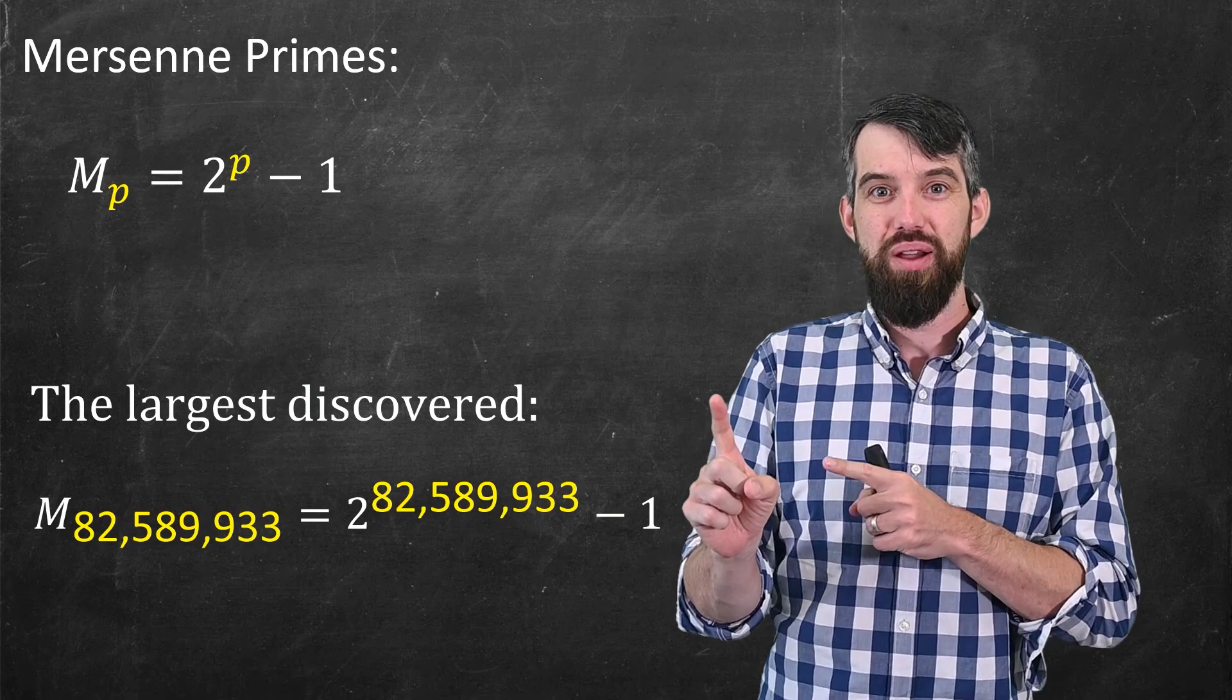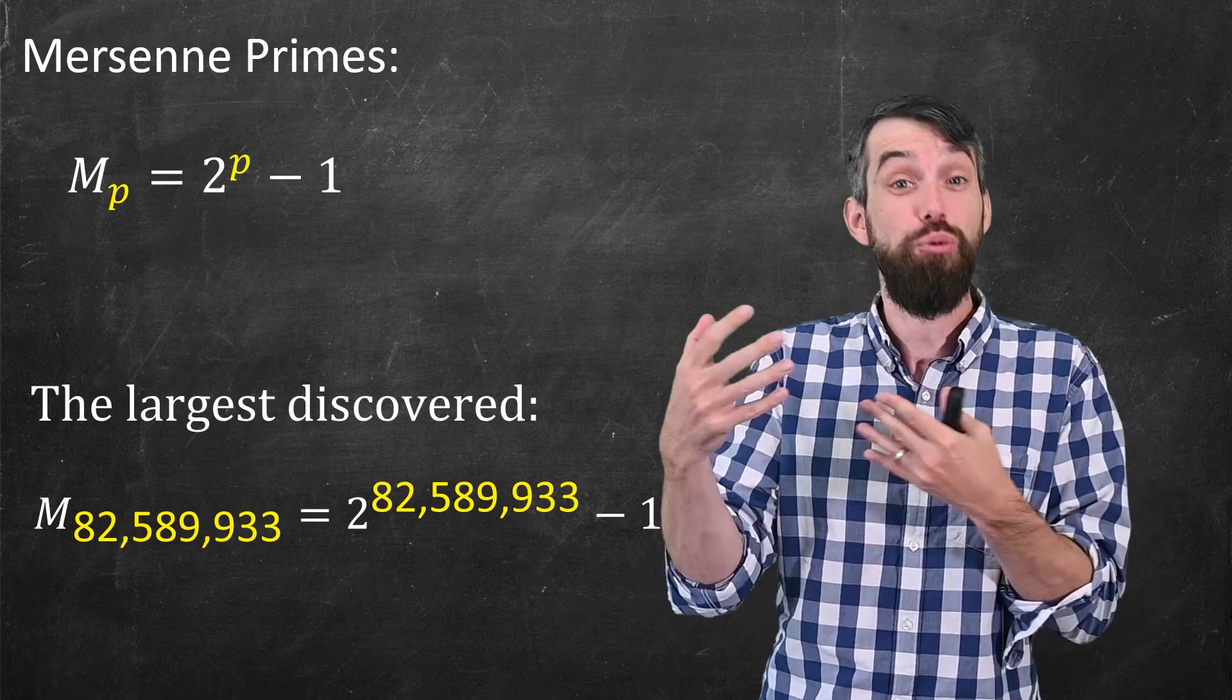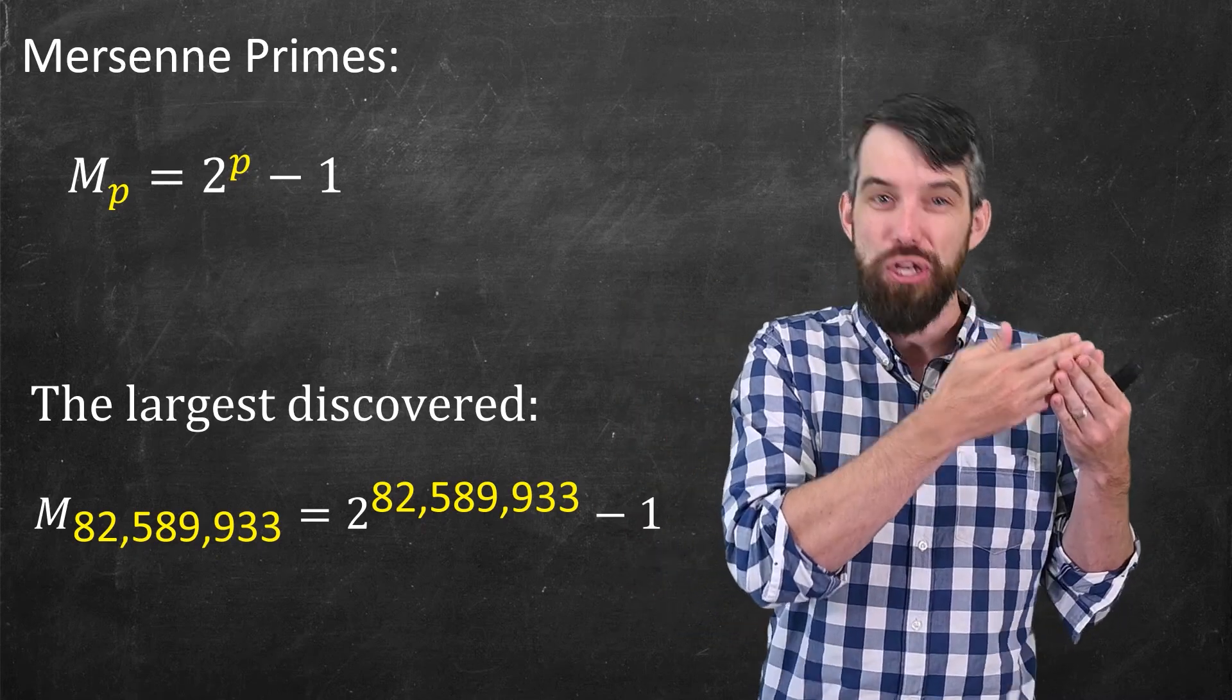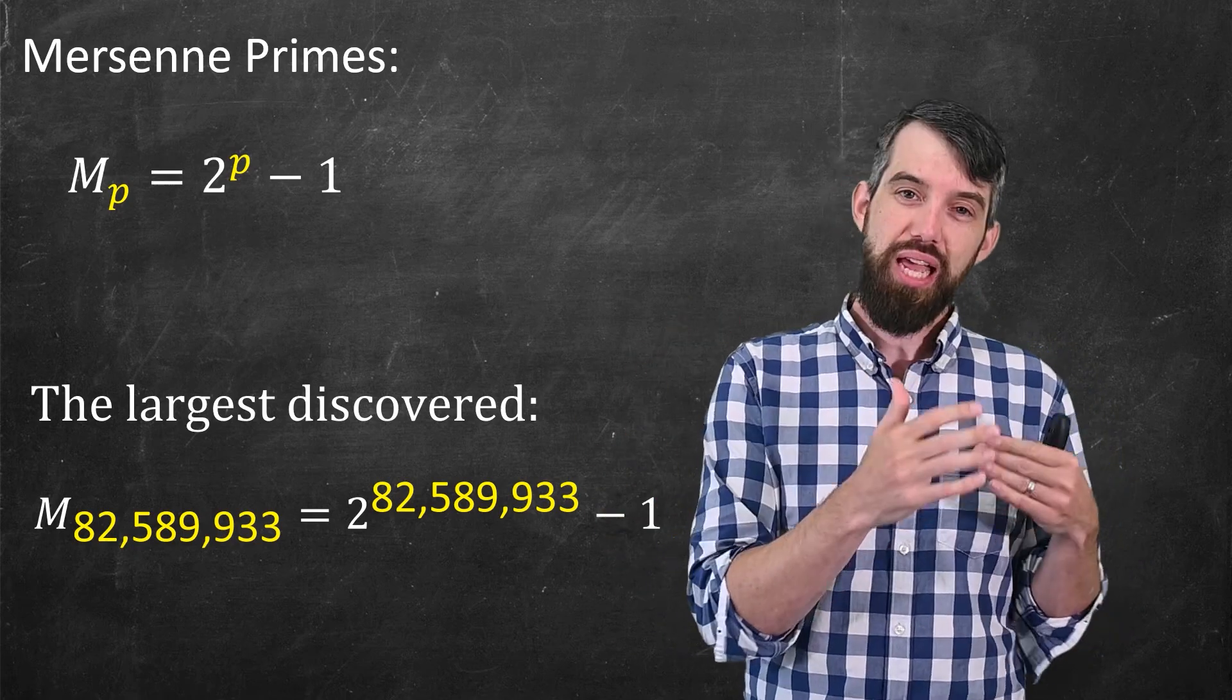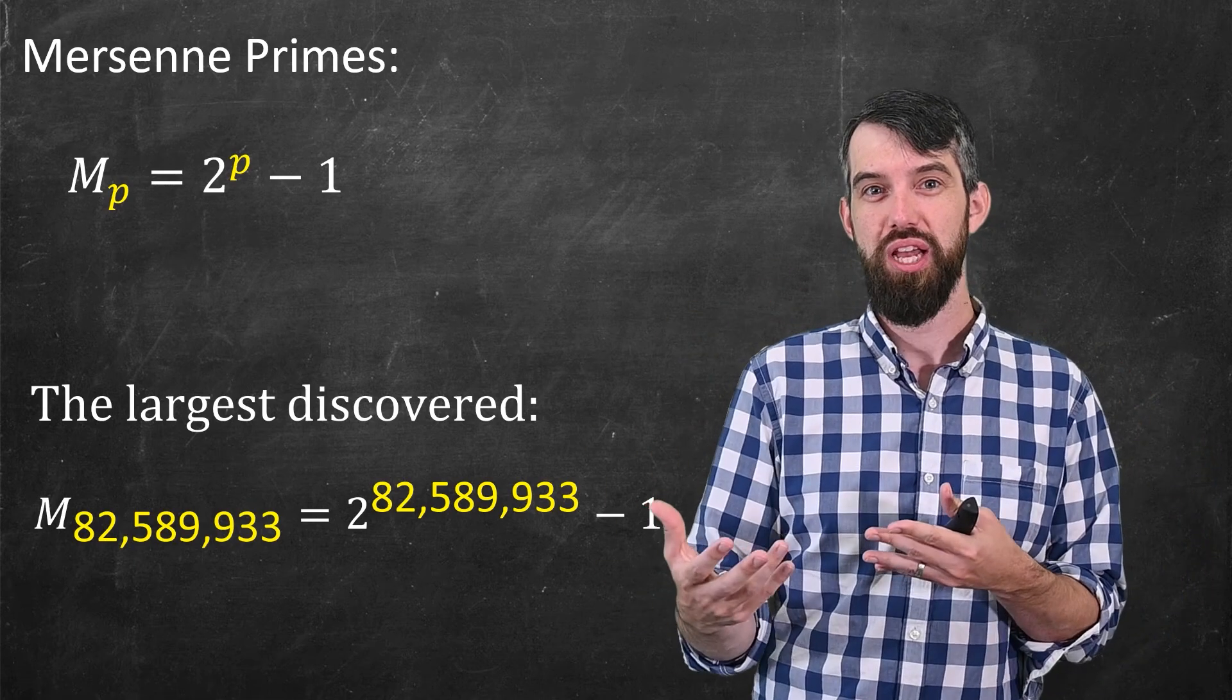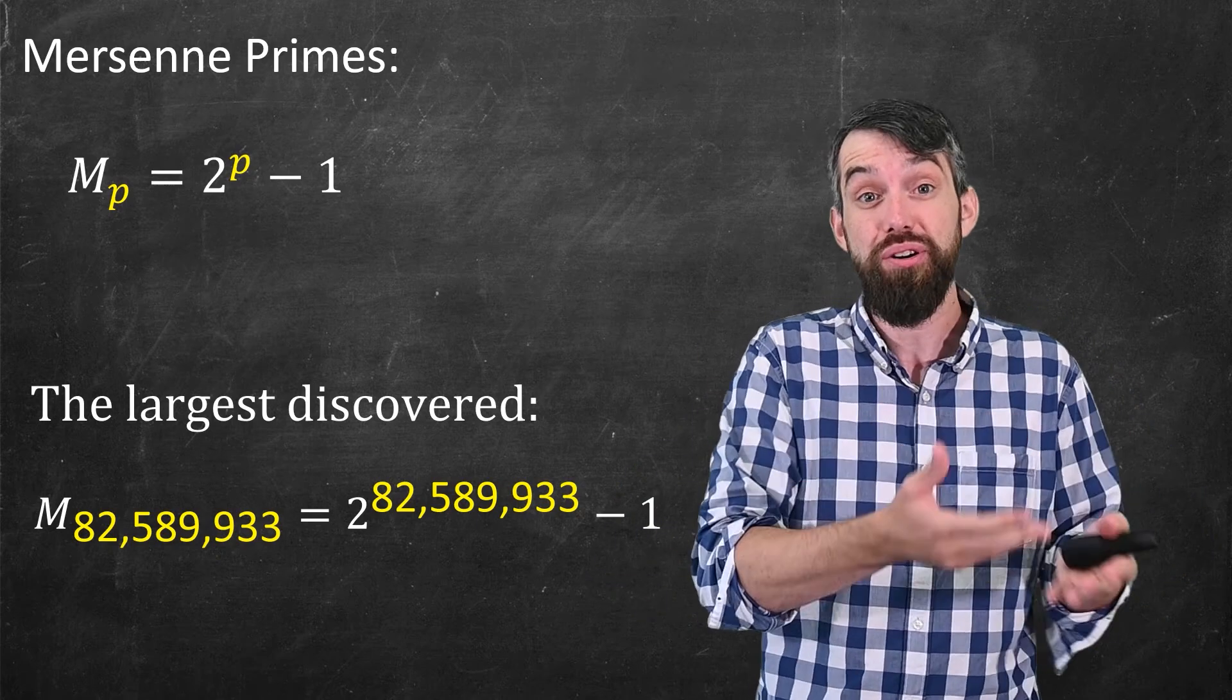And it turns out that Mersenne primes are so useful for this process of figuring out really, really large prime numbers that the last seven largest prime numbers that humanity has discovered, every one of them has been a Mersenne prime. Now, Mersenne primes are useful for discovering extremely large prime numbers for more than just the fact that they're a candidate to be considered prime.